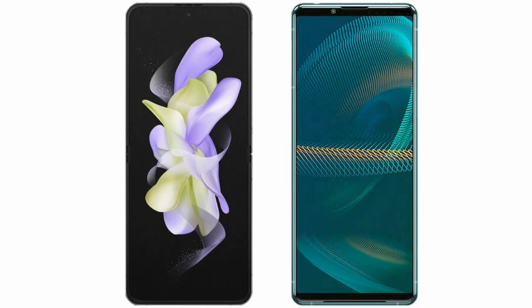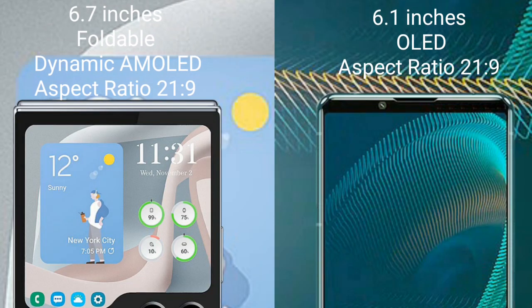I will compare the new Samsung Galaxy Z Flip 5 with Sony Xperia 5 Mark III. Samsung Galaxy Z Flip 5 comes with a 6.7-inches foldable dynamic AMOLED display and aspect ratio 21x9. Sony Xperia 5 Mark III comes with a 6.1-inches OLED display and aspect ratio 21x9.